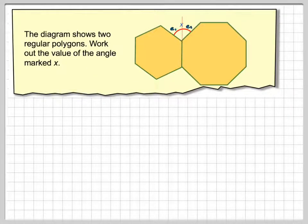If we draw this line in here, this E1 would be the exterior angle of this hexagon, and this here would be the exterior angle of this octagon.